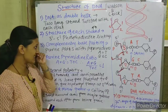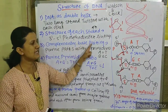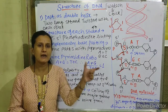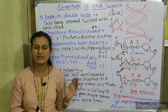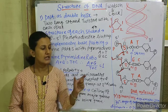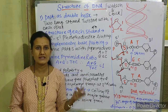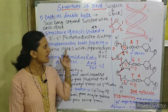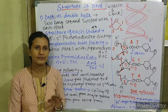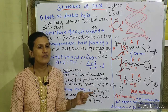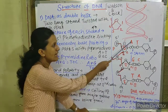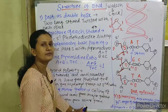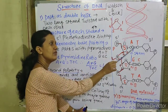Third point — complementary base pairing. Nitrogen bases in DNA are of two types: double-ring compounds, which are adenine and guanine (called purines), and single-ring compounds, which are cytosine and thymine (called pyrimidines). Complementary base pairing means purines always pair with pyrimidines. Adenine always pairs with thymine with a weak double hydrogen bond.